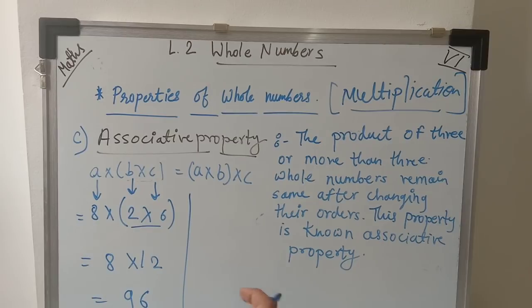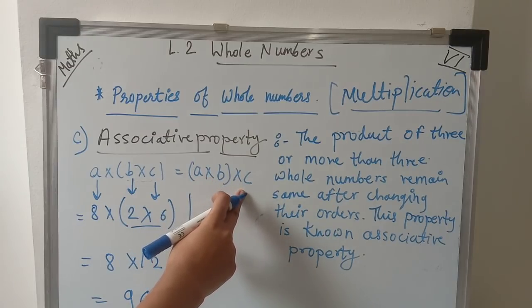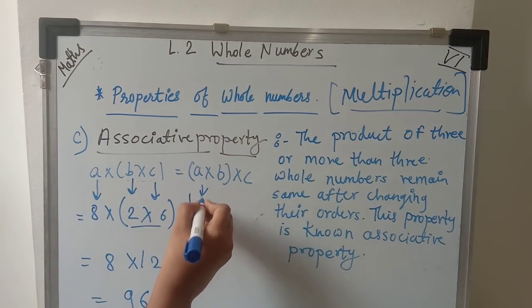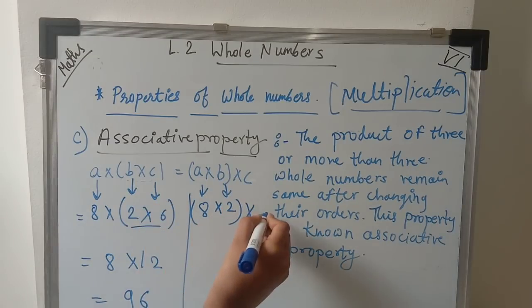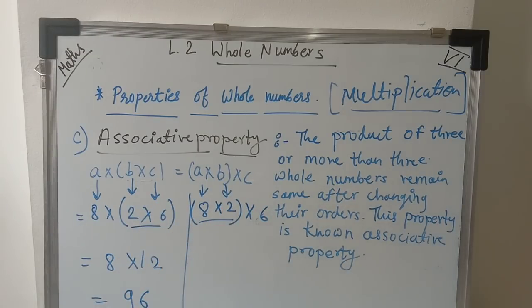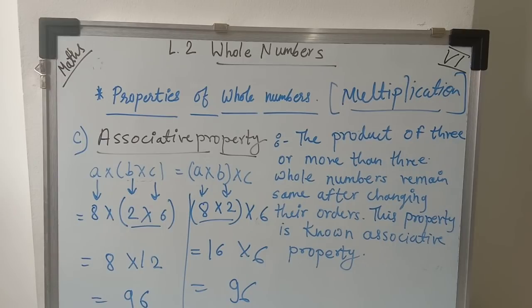Now on the right hand side, we change the order: (a × b) × c = (8 × 2) × 6 = 16 × 6 = 96. After changing their order, the answer remains the same. This demonstrates the associative property — order does not affect the product when multiplying three or more whole numbers.